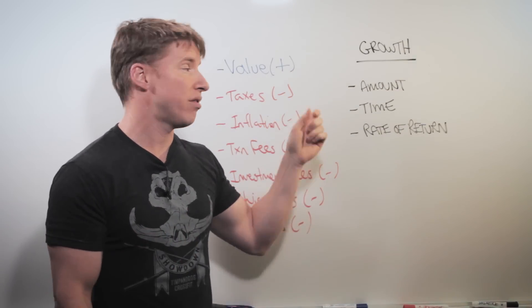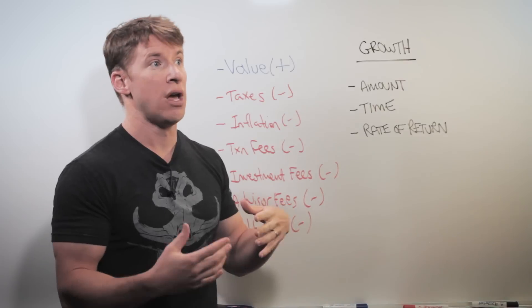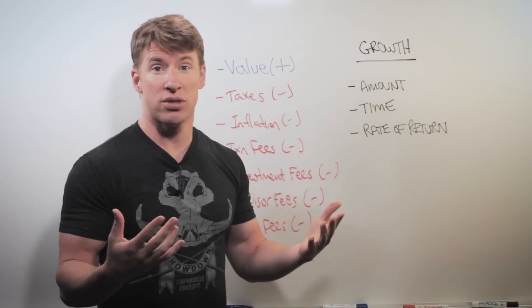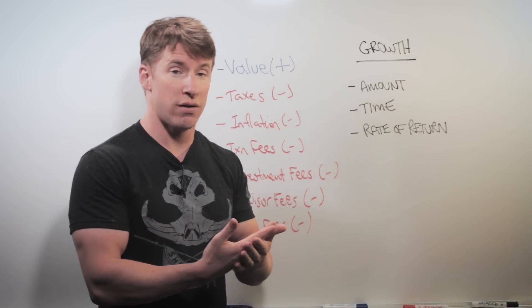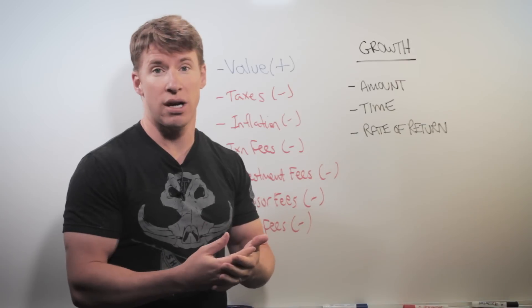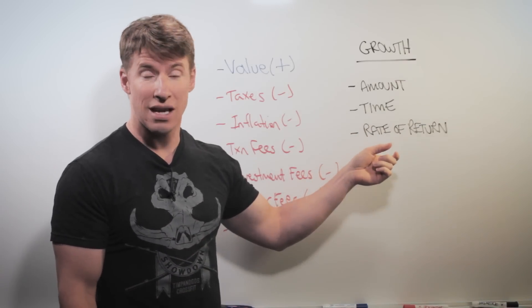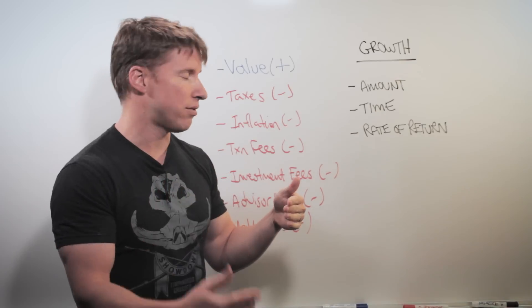Taxes, if you have to pay taxes on the growth, that affects your rate of return. So if your rate normally would be 10%, but your marginal tax rate is 30%, then your rate of return is actually 7%. It's not 10, it's 7.